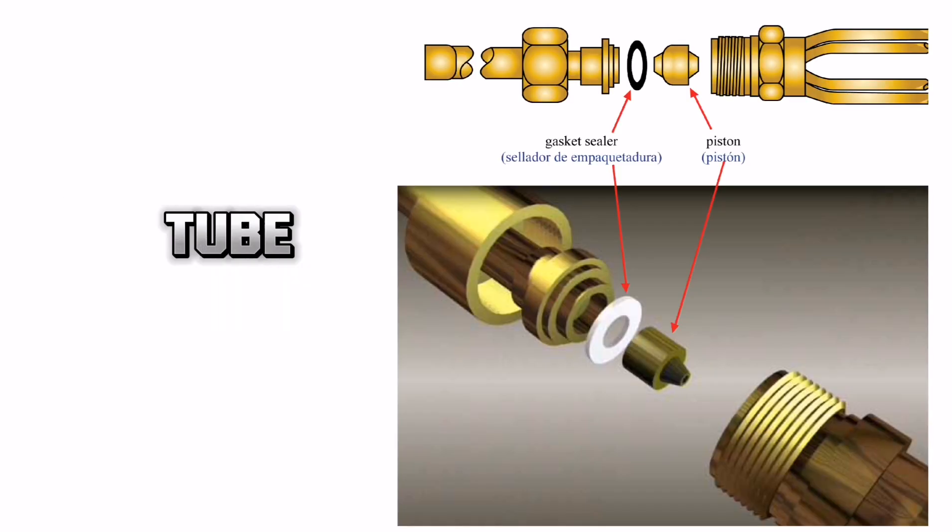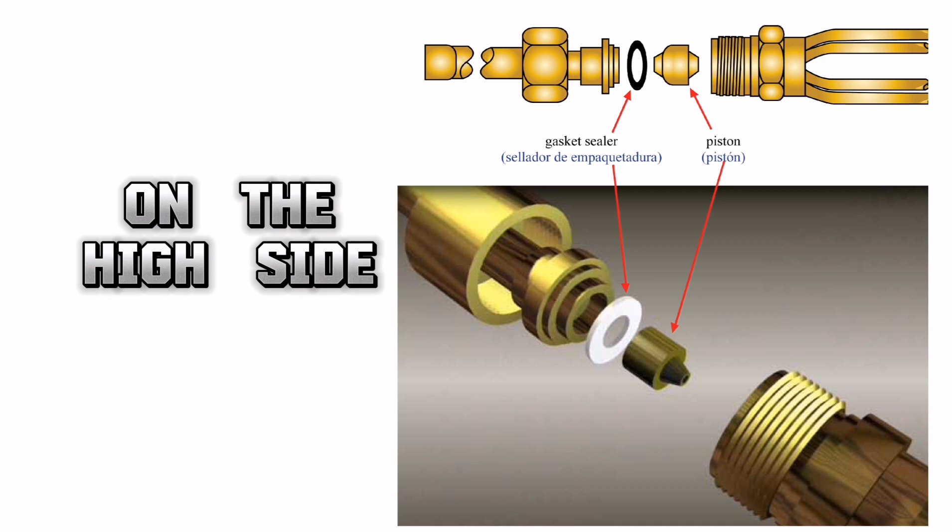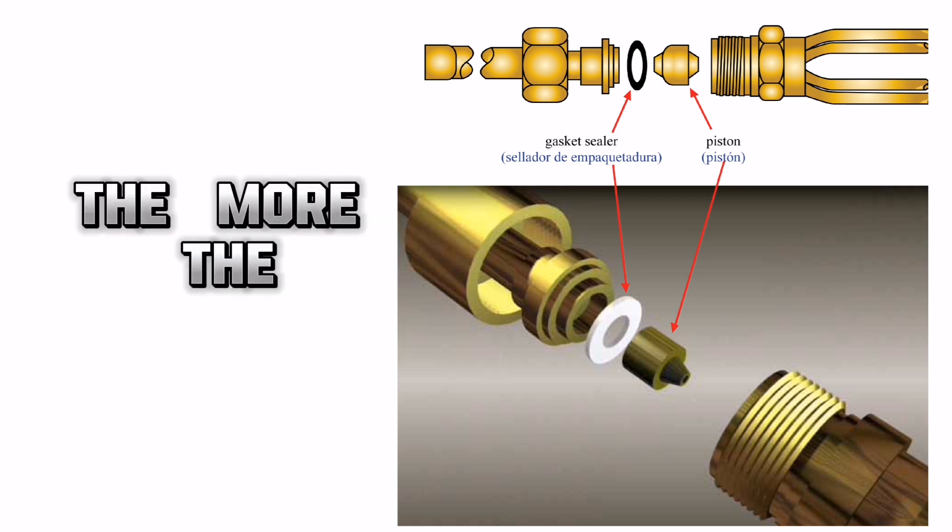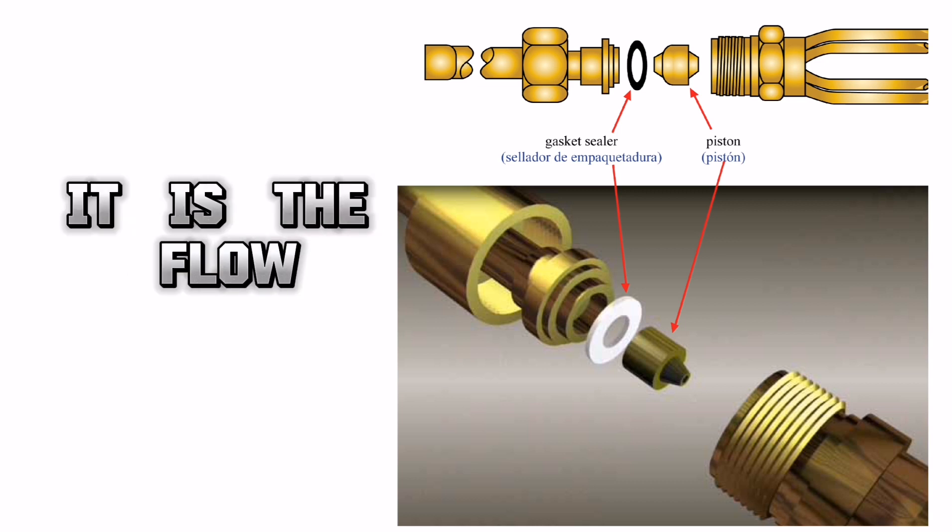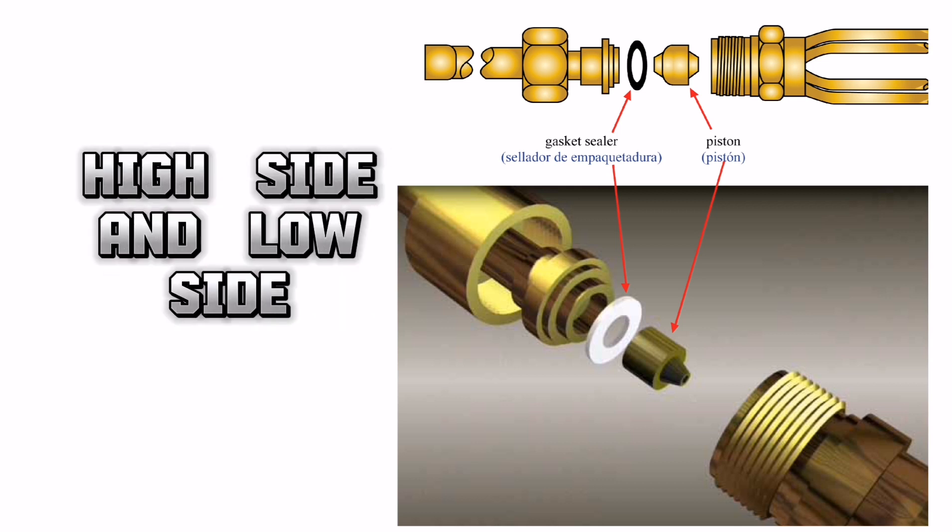Just like the capillary tube, the higher the pressure on the high side, the more flow you're going to have. The higher the pressure in the evaporator, the less flow you're going to have. It is the flow that these two are going to be maintaining. Again, they used to use the high side and the low side float, but they've gotten away from those.